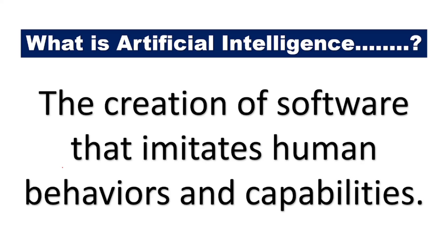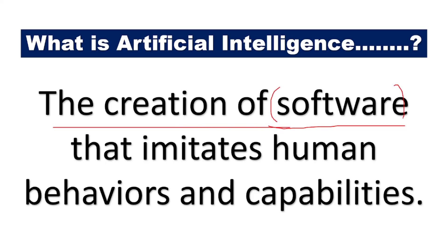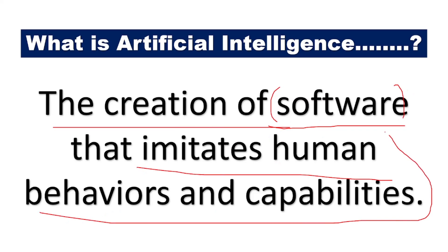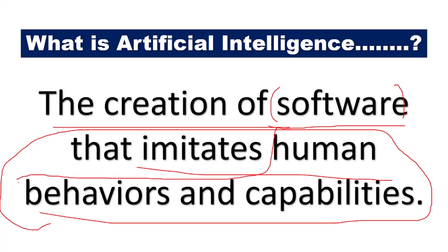Next, if you see, in WhatsApp and Facebook or any social media, sometimes you will get an automatic reply for your message. Like in service operators, when you type some query or feedback, automatically you are getting a reply. That is also Artificial Intelligence. Artificial Intelligence is a process of creation of software — a software that imitates human behaviors and capabilities. It acts similarly to human behavior. Creation of such software is known as Artificial Intelligence.